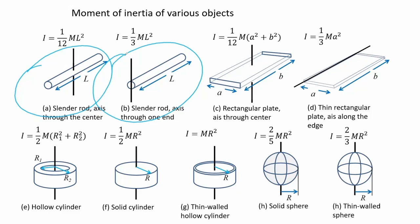Figures C and D show the moment of inertia for a rectangular plate, where the difference is that the orientation of rotation is changed. Other objects are also observed to have different moments of inertia.